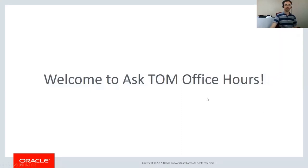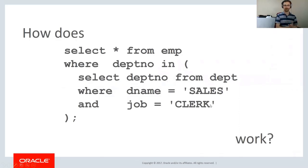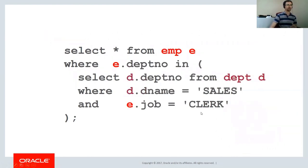First up, we had a question come in. Someone was asking about this query — a fairly straightforward query. We've got employees from particular departments and they were wanting to know what was going on. I'm assuming they're using the standard Scott EMP and DEP tables. To help clarify, I'm going to add some aliases. We can see we're getting employees who are in the sales department, but we also have this filtering on job for Clark within the subquery. This is where the confusion arises.